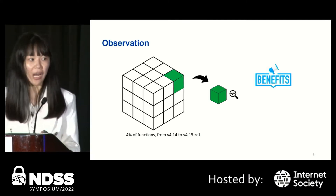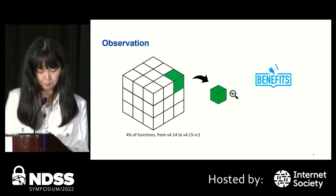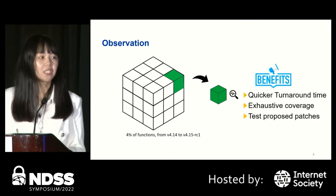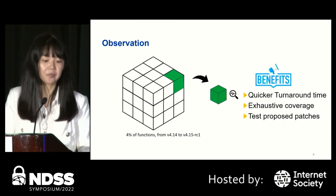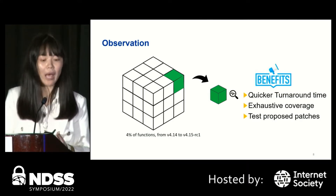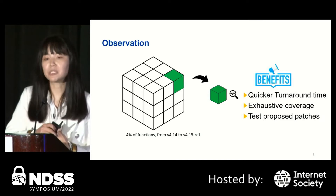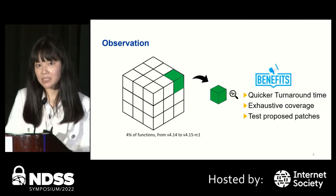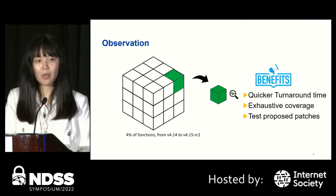Our idea is: would it be possible to do a whole-program analysis once and then incrementally analyze only the changes? If so, we get several benefits: first, a quicker turnaround time that fits the precise analysis into the development cycle; second, because our incremental analysis is based on static analysis, we have exhaustive code coverage; finally, we can help test proposed patches, which is important since currently patch review depends on time-consuming email exchanges and peer review.